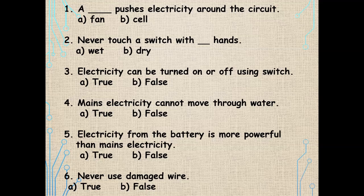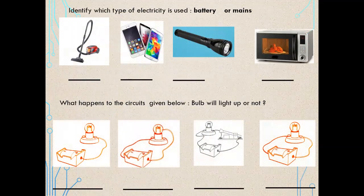Never use a damaged wire — true or false? It is true, we should never use a damaged wire. Now identify which type of electricity is used — battery or mains. If we need to plug it in, then we are using mains electricity. If we are putting in a cell or a battery, then we are using battery electricity.